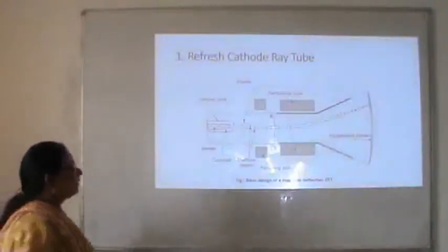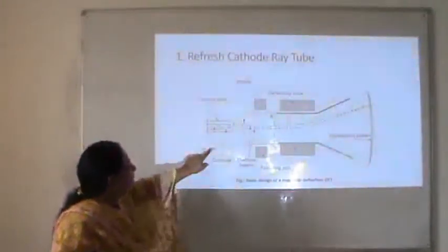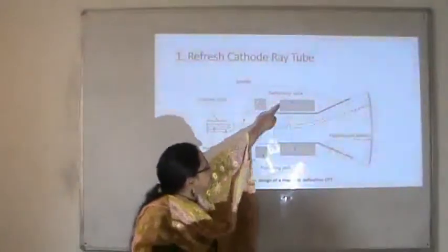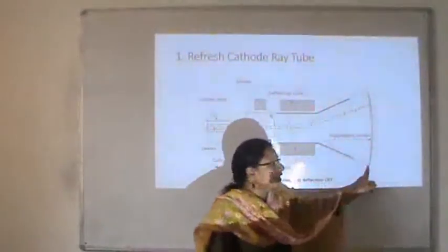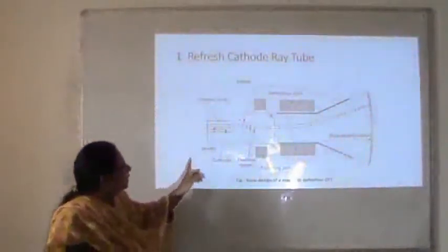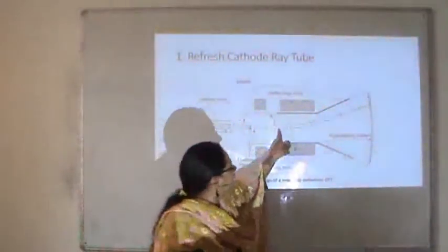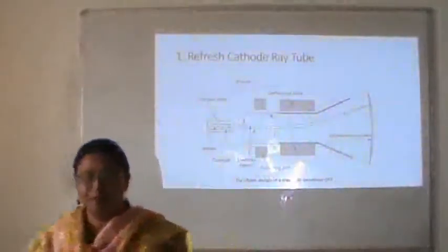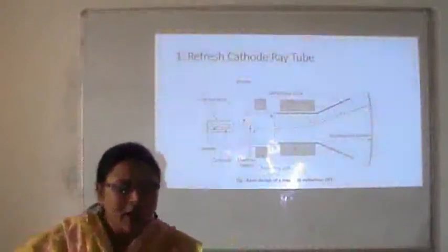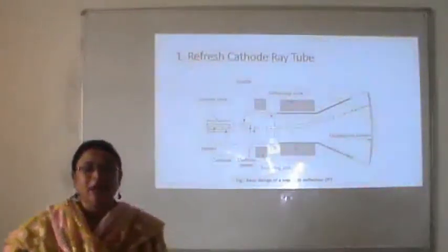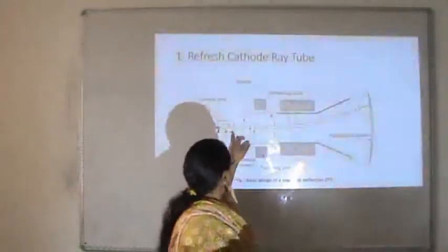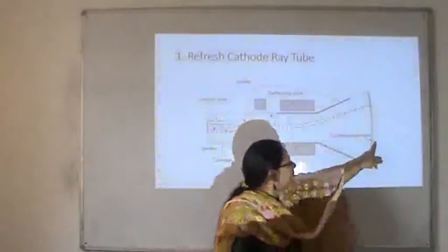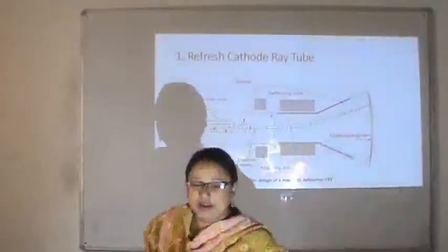This is the basic design of a magnetic deflection CRT. It has a heater, a cathode, a control grid, a focusing coil, and deflecting coils. These are followed by the fluorescent screen. The electron beam is generated and falls on the fluorescent screen at a particular location, generating a spot at that position. Every time we want to generate a spot on the fluorescent screen, the electron beam points to that particular position.